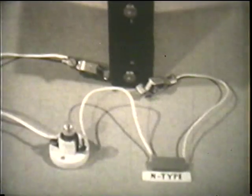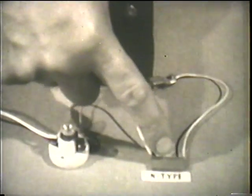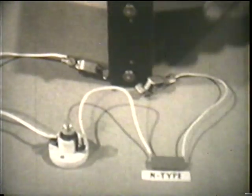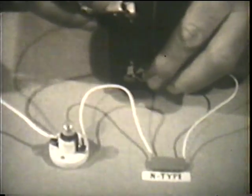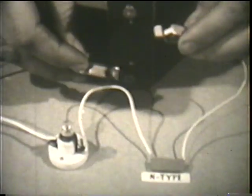The impurity atoms, because they give up electrons, are called donor atoms. A semiconductor like this, in which current is carried by free electrons, is known as N-type. N for negative carrier. Here is a piece of N-type germanium. Notice that it conducts current equally well in either direction, without the application of heat.